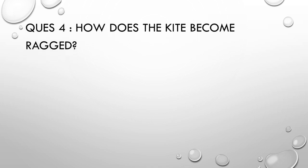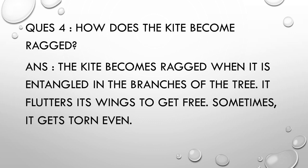Question 4: How does the kite become ragged? Answer: The kite becomes ragged when it is entangled and gets stuck in the branches of a tree. It flutters its wings trying to get free. Sometimes it gets torn because when you pull the string trying to get your kite back, the kite can be torn when entangled in the branches of the tree.